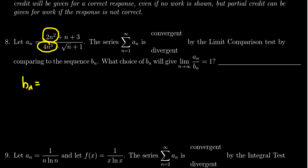So b sub n is just going to be the leading terms there, 2n squared over 4n cubed. We want to simplify that. 2 goes into 4 two times. n squared goes into n cubed n times. So this simplifies to 1 over 2n. And so that is the sequence we'd be using.